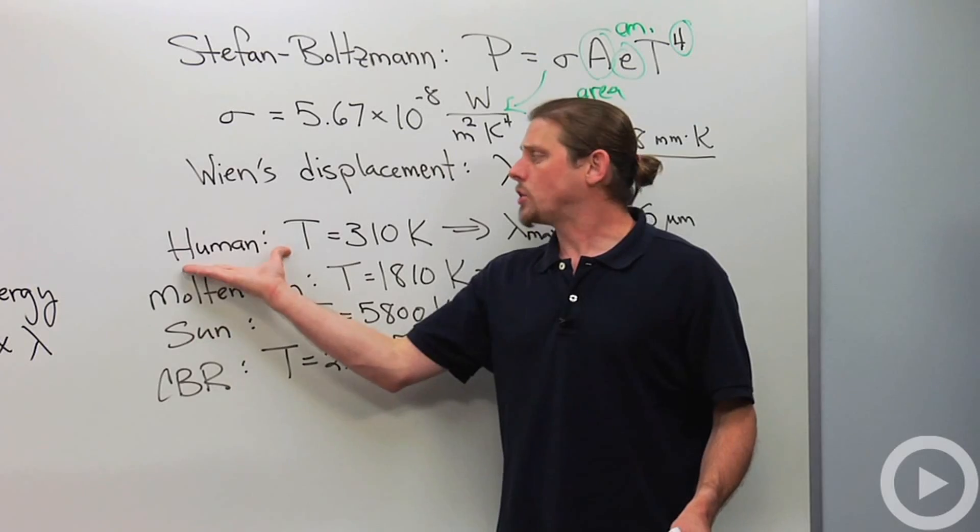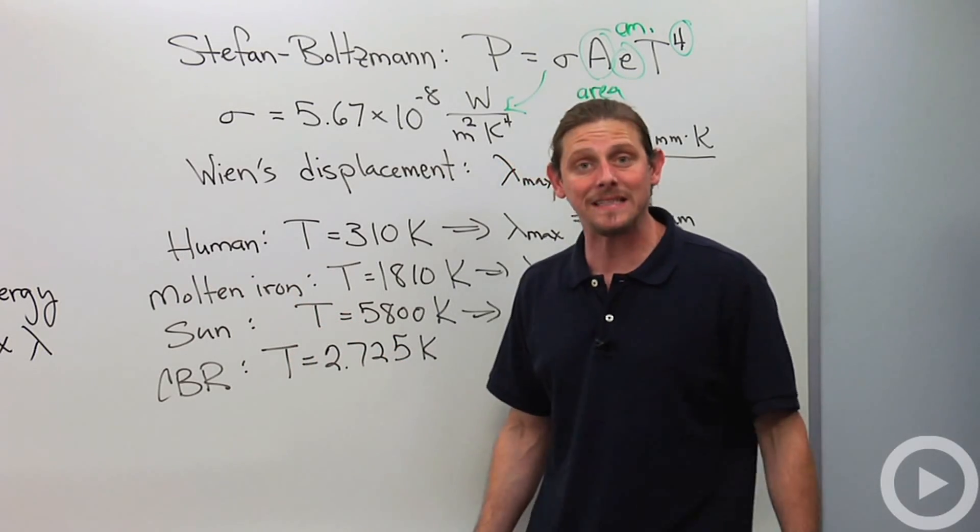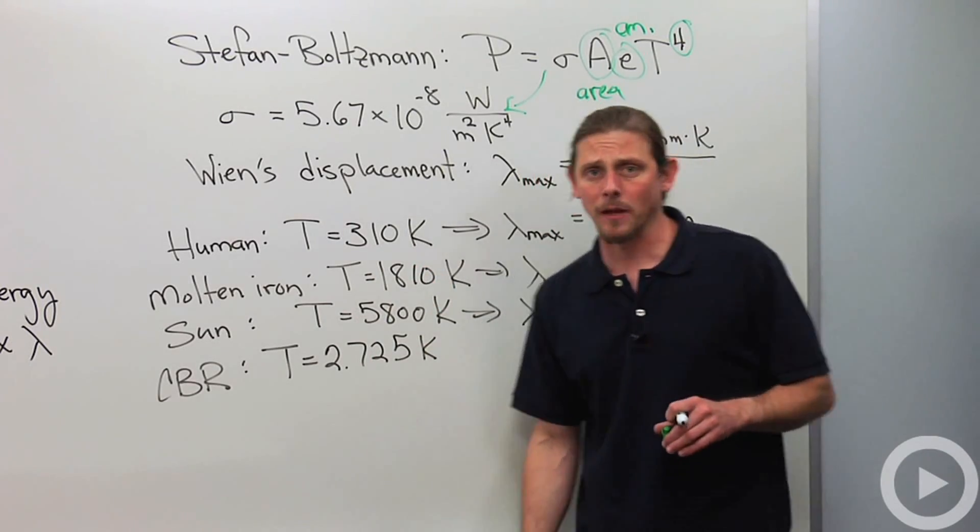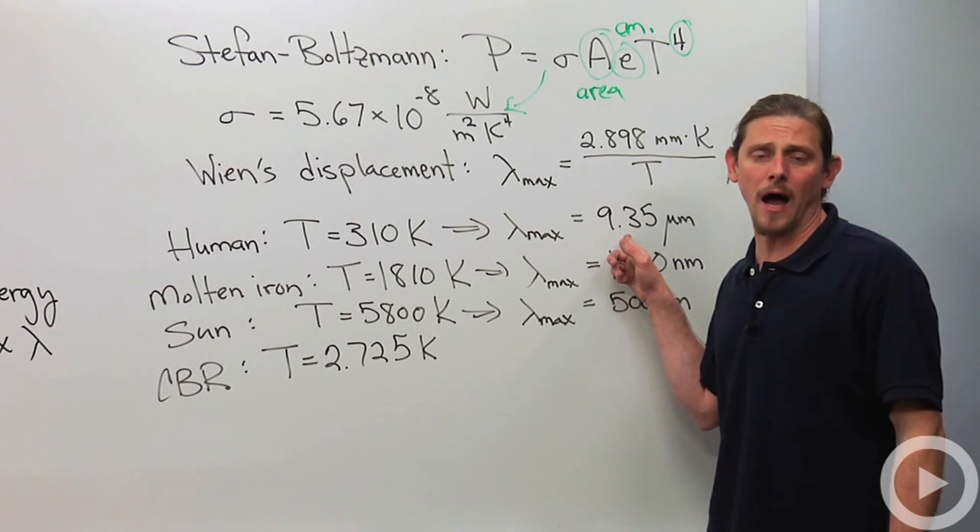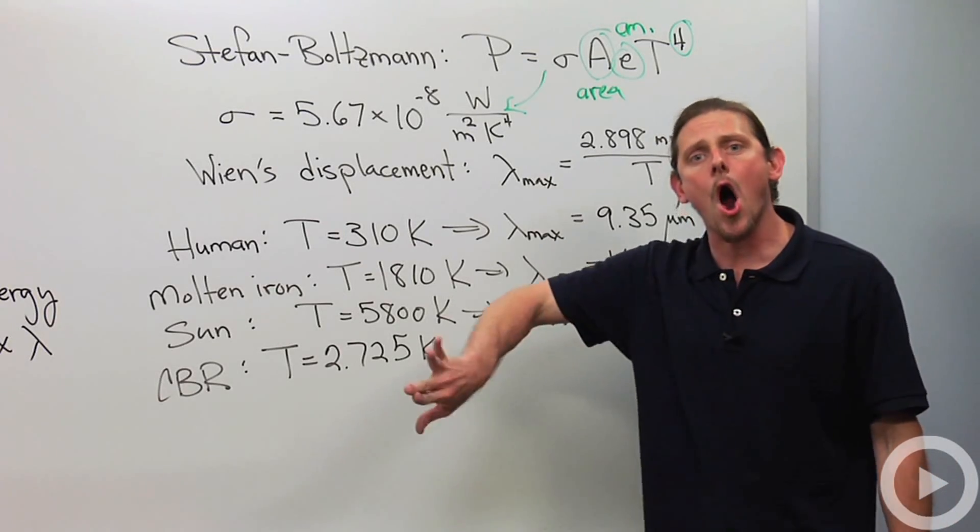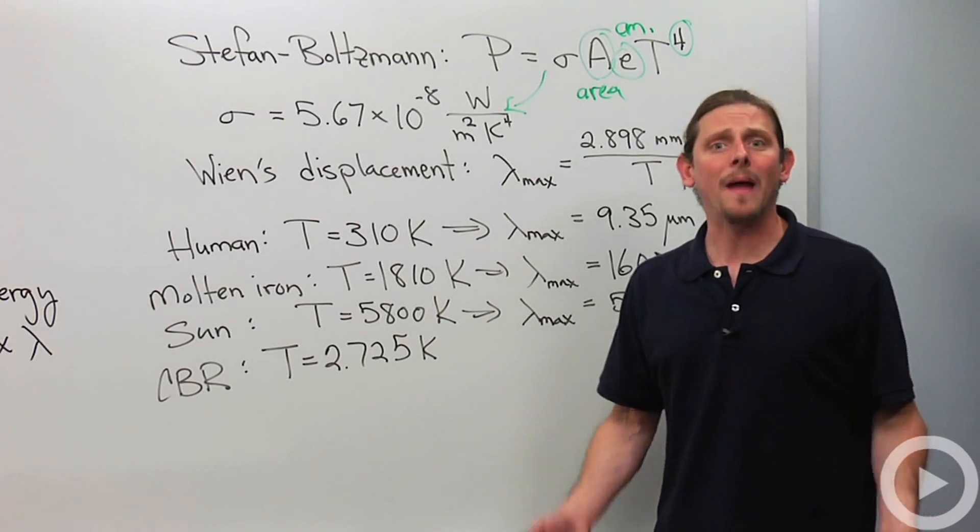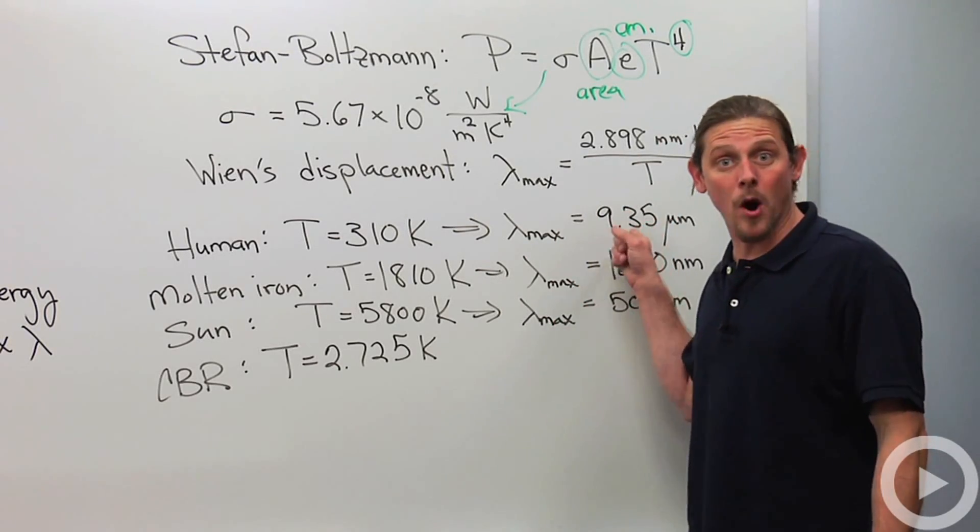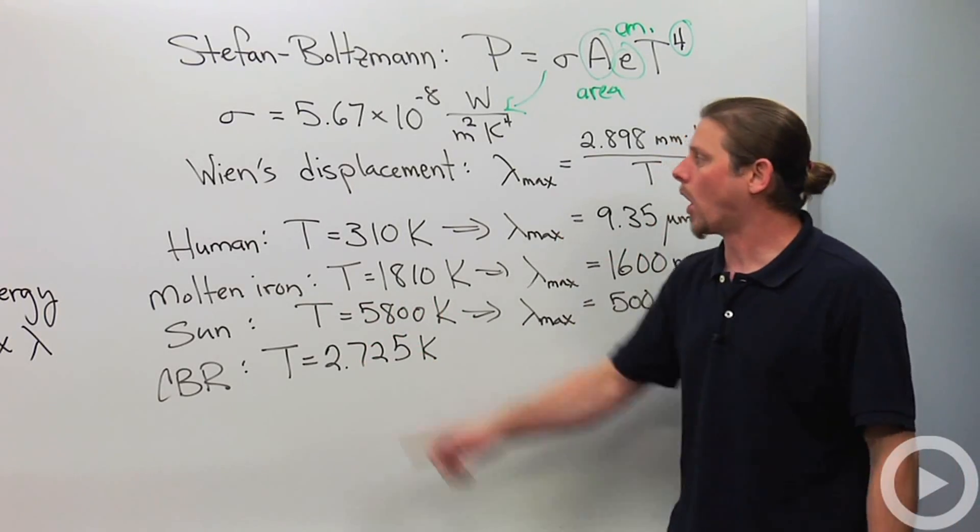So, let's just go ahead and do some examples. A human being has a body temperature, internal body temperature, of 98.6 degrees Fahrenheit. That translates to 310 Kelvin. So, Wien's displacement law tells us that the maximum wavelength is 9.35 micrometers. So, this is a microwave. You can't see it. It's not visible. It's in the far infrared. But, that's how thermal imaging works, and that's how those heat goggles work. You look at something, and you're looking at this part of the spectrum. And at this part of the spectrum, all human beings are like light bulbs. They're just radiating.